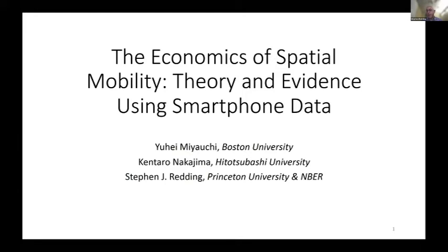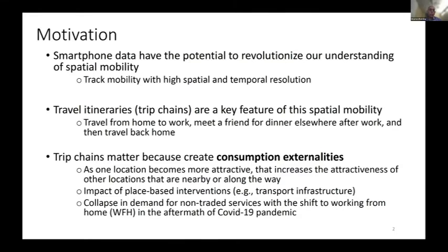The paper I'm going to present today is on the economics of spatial mobility: theory and evidence using smartphone data — highlighting how GPS information in smartphones can shed new light on patterns of spatial mobility within cities. This is a joint paper with Yuhei Miyouchi at Boston University and Kentaro Nakajima at Hitotsubashi University. We're trying to emphasize just how smartphone data have this potential to really revolutionize our understanding of spatial mobility within the economy.